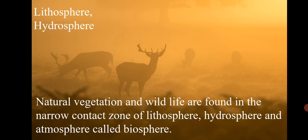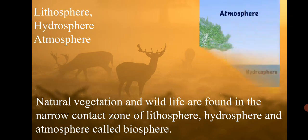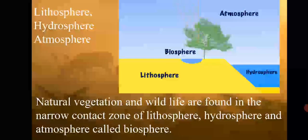The lithosphere is the part of earth made up of rocks; the hydrosphere is the part of earth made up of water; and the atmosphere is the part of earth made up of gases. In this area, there is a narrow zone in which you can find living organisms — this narrow zone of lithosphere, hydrosphere, and atmosphere where living organisms are present is called the biosphere.